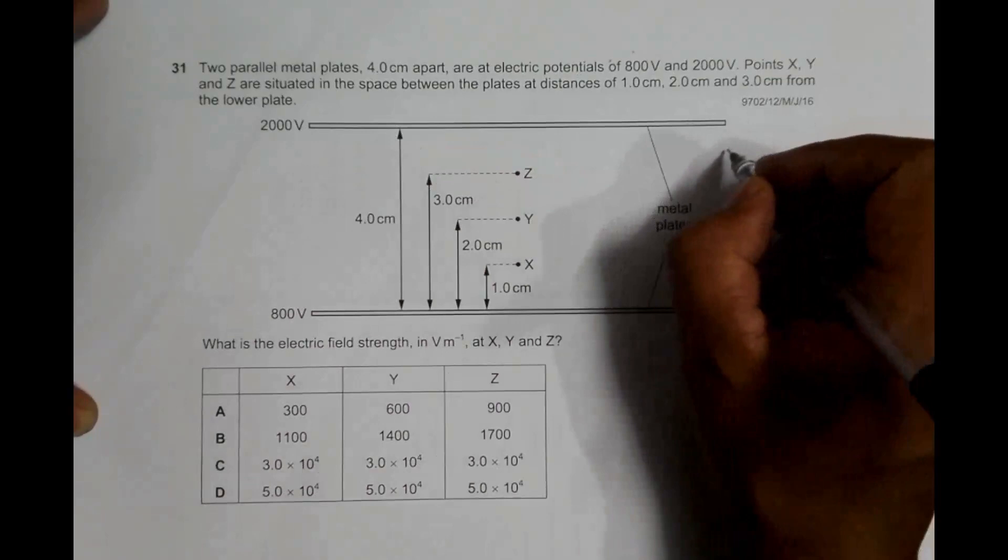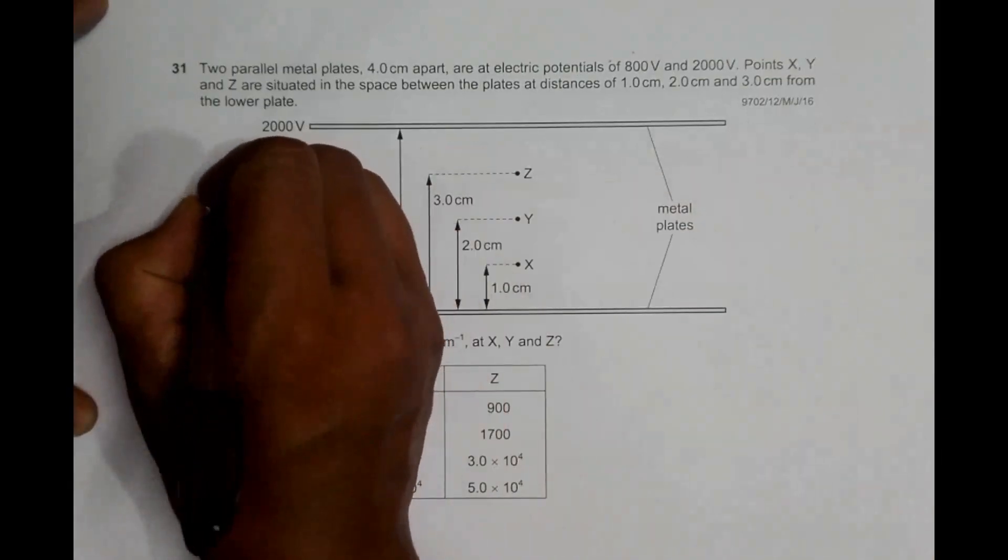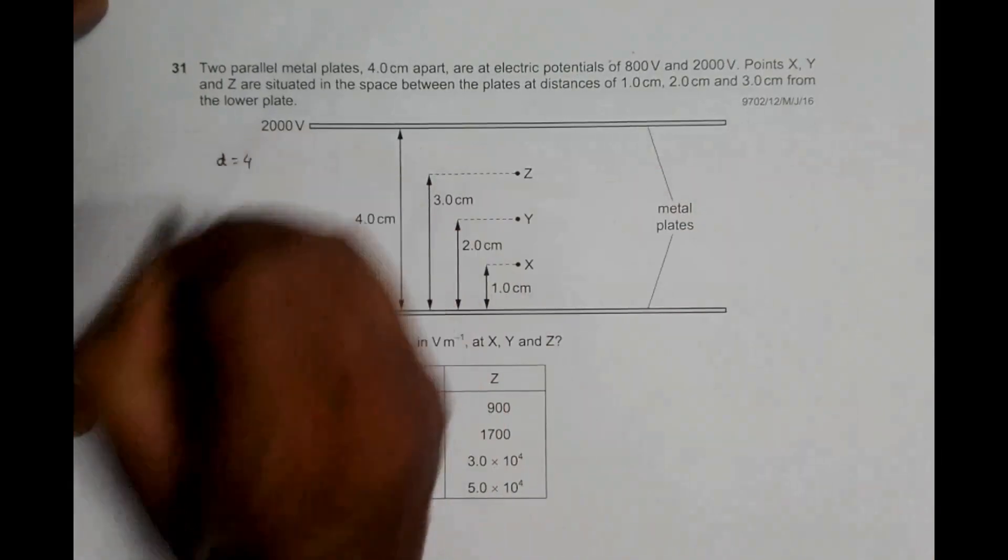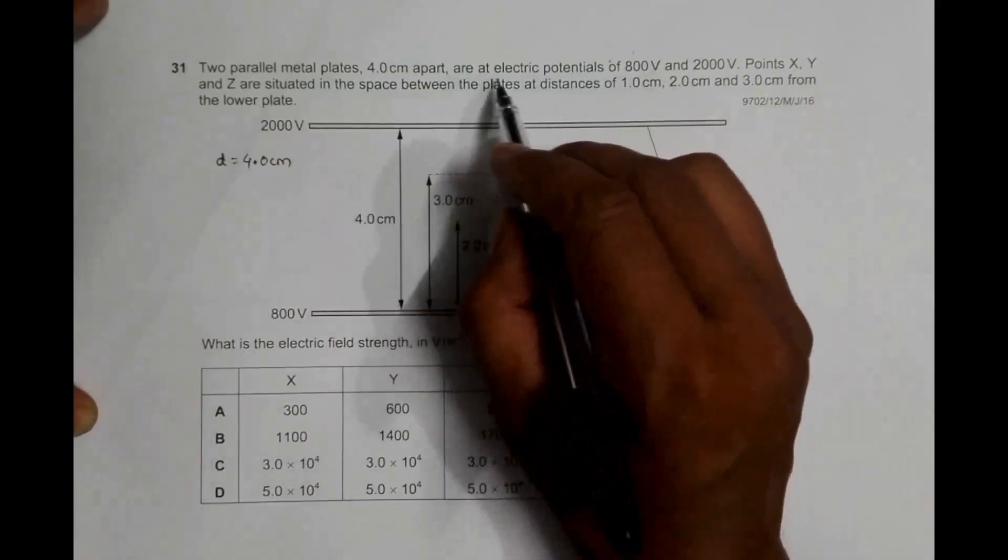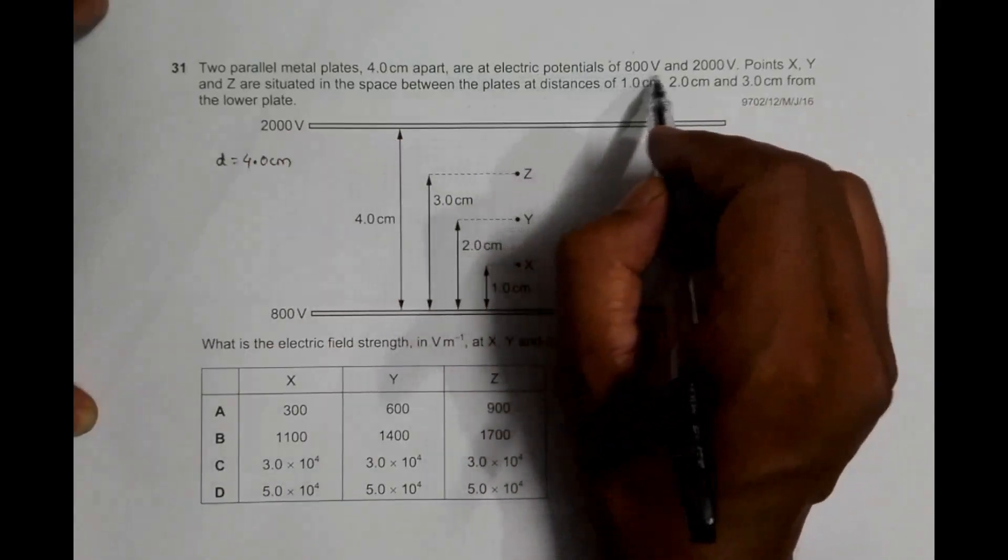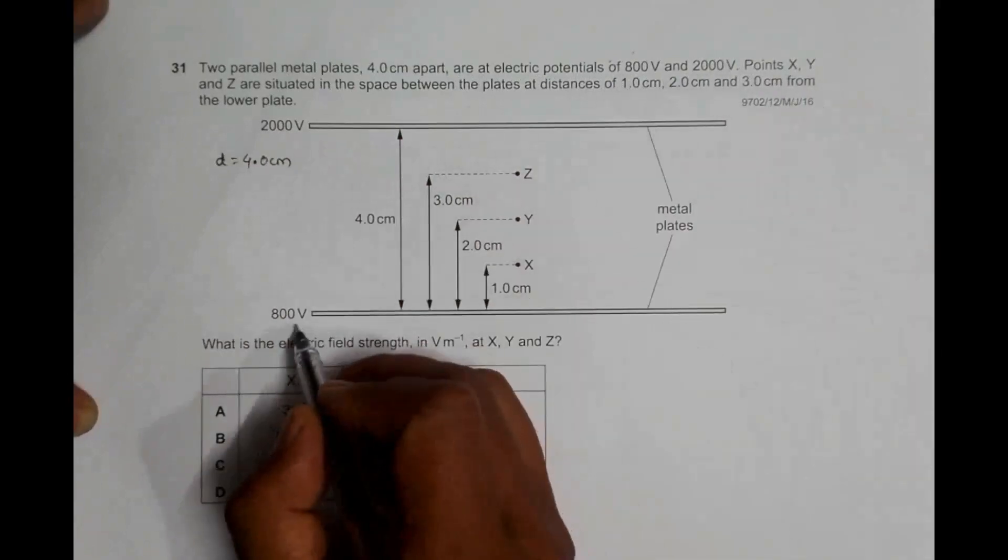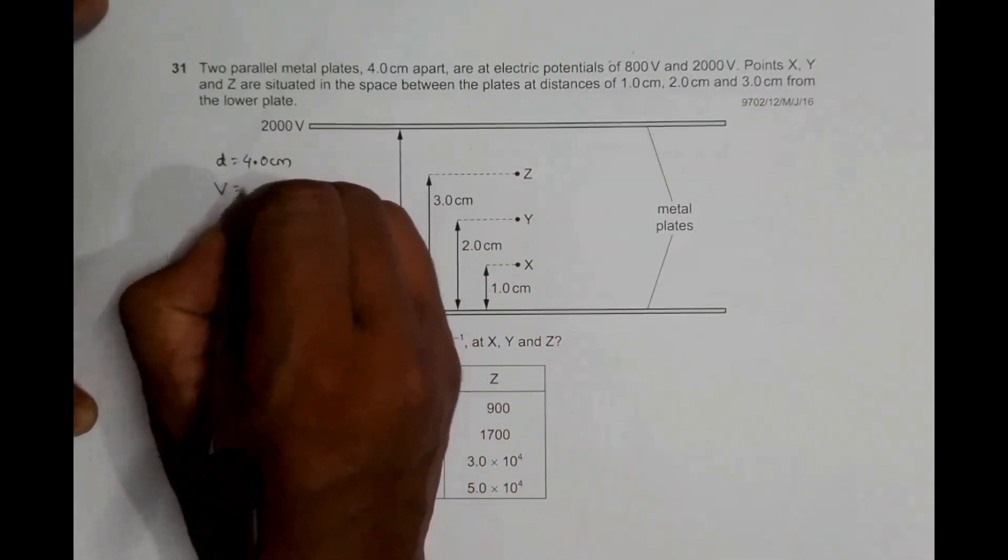It says that D is equal to 4.0 centimeters at electric potentials of 800 volts and 2000 volts. So this is 800 volts, this is 2000 volts.